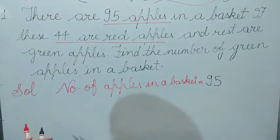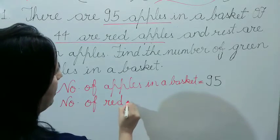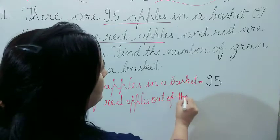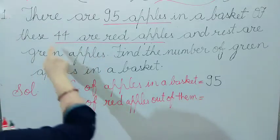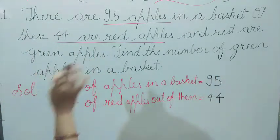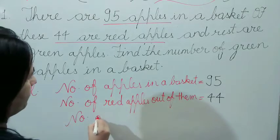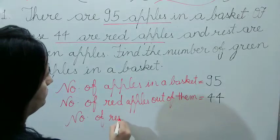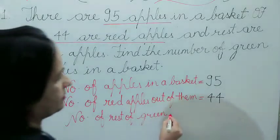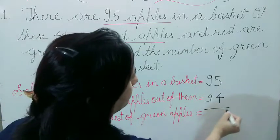We will write there 95. Now, number of red apples out of them — so we will write here 44. Now they are asking about the green apples. What will we write on the third line? Number of rest of green apples. How to do? Subtract it now.